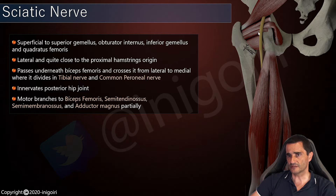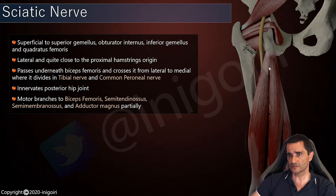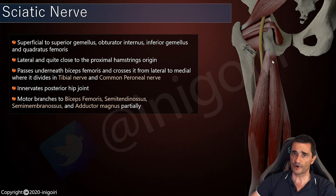It innervates the posterior capsule of the hip, and provides several motor branches to the biceps femoris, semitendinosus, semimembranosus, and partially innervates the adductor magnus.